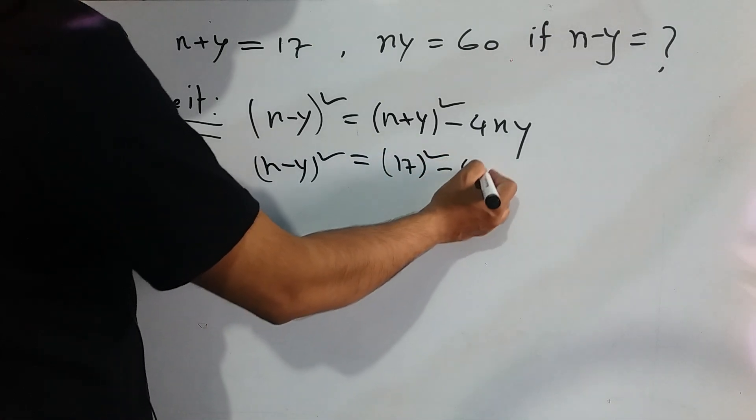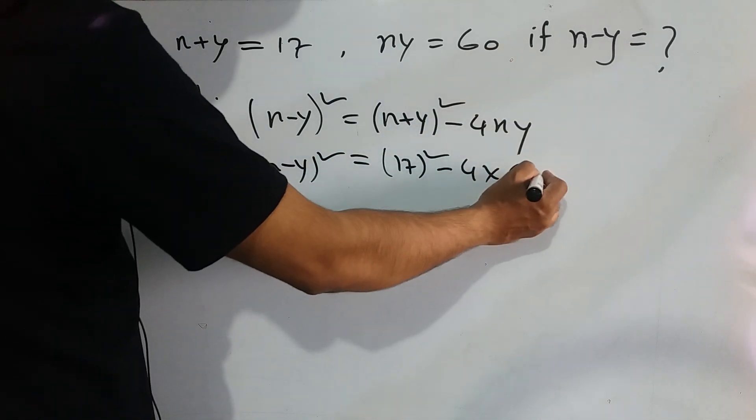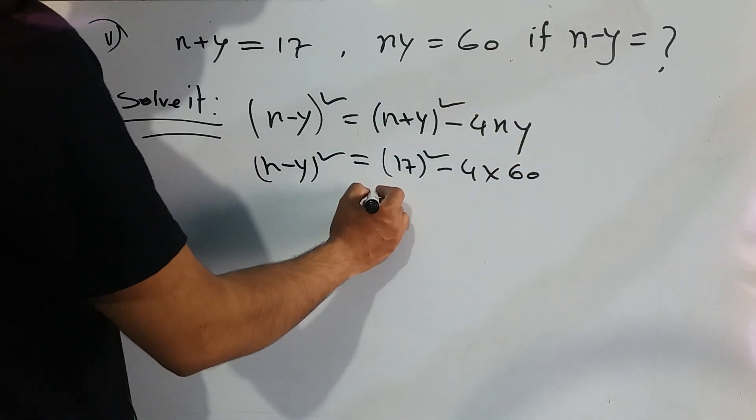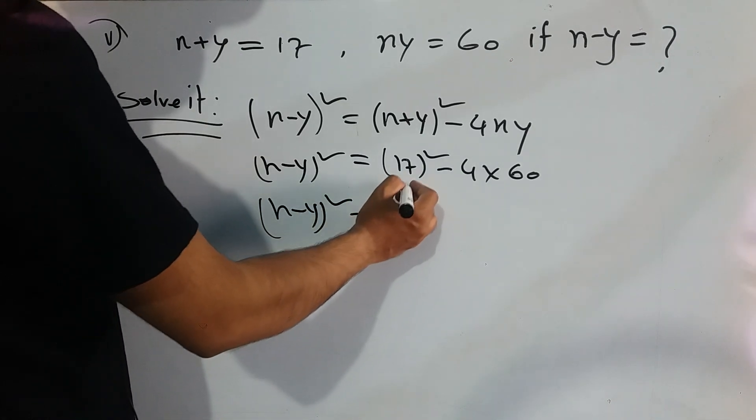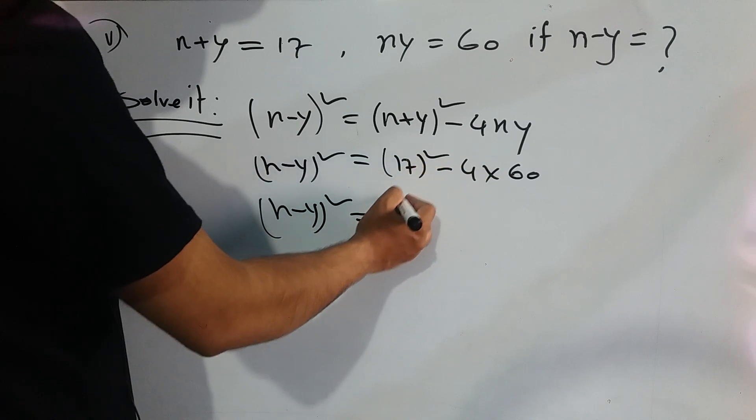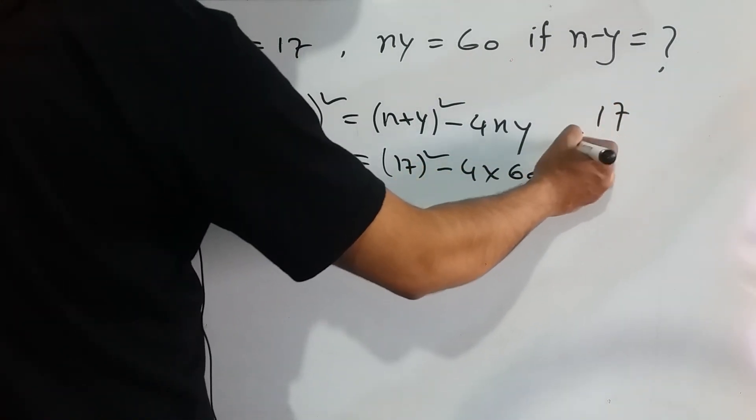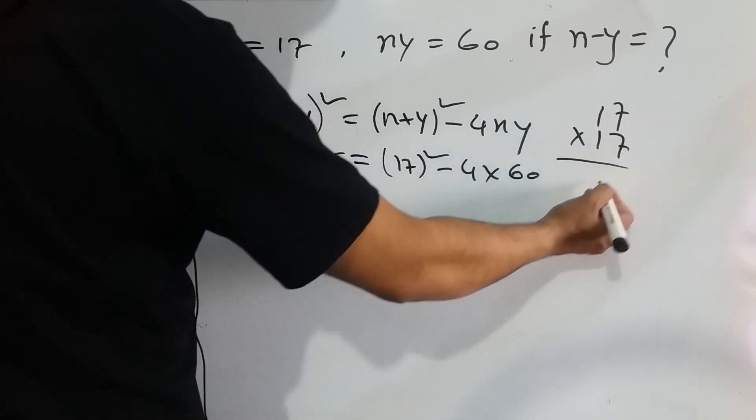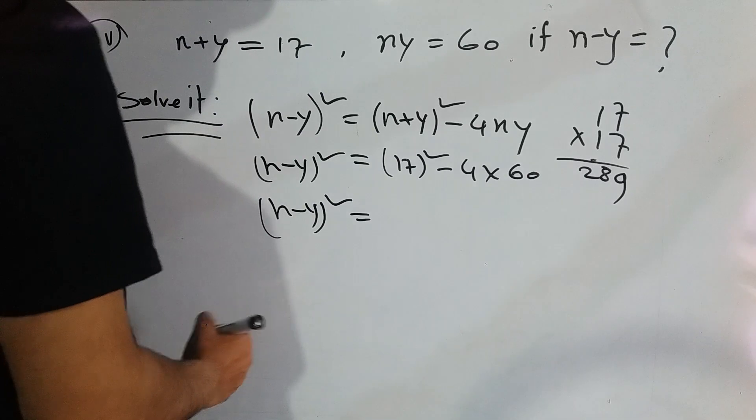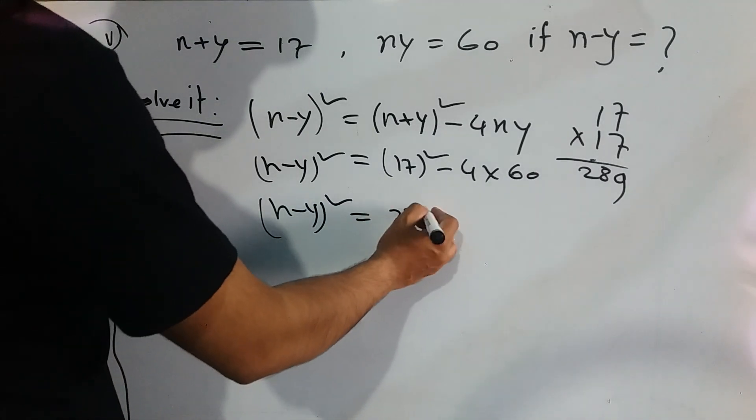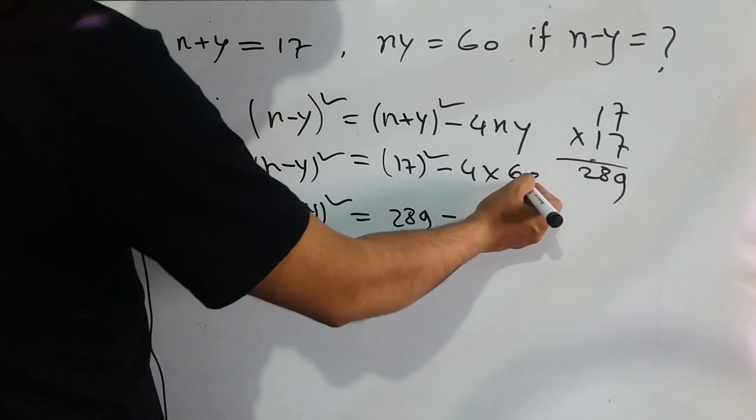So x minus y whole square equals 17 whole square minus 4 into 60. x minus y whole square equals, we know 17 into 17, that's 17 into 17, we will get 289. So 289 and 4 times 60, that's 240.